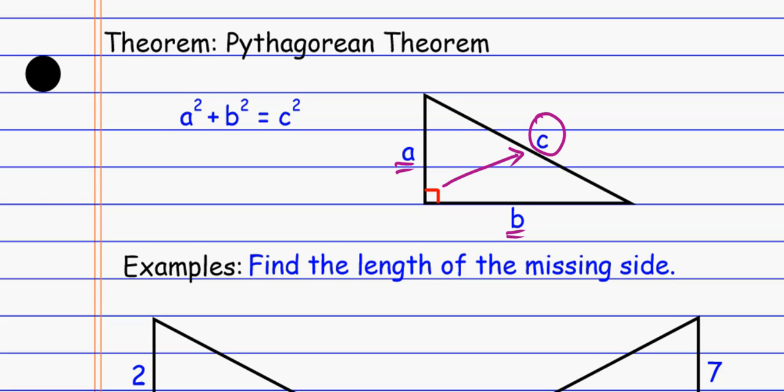And the legs, once again, are interchangeable. It doesn't matter which one is A and which one is B. The only thing that matters is that the hypotenuse is the thing that's by itself. So leg squared plus leg squared equals hypotenuse squared.